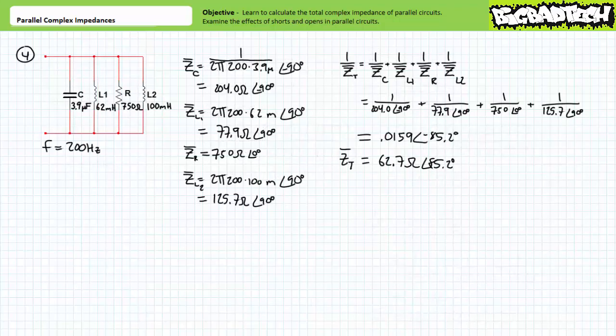Finally, for our fourth example problem, we've been given a parallel relationship of a 3.9 microfarad capacitor, a 62 millihenry inductor, a 750 ohm resistor, and a 100 millihenry inductor at an excitation frequency of 200 hertz. The capacitor is an impedance of roughly 204.0 ohms at an angle of negative 90 degrees. The first inductor is an impedance of 77.9 ohms at an angle of positive 90 degrees. The resistor is an impedance of 750 ohms at an angle of zero degrees. And the second inductor is an impedance of 125.7 ohms at an angle of positive 90 degrees. Calculating the total impedance using the more involved method for two or more impedances in parallel, we arrive at a total impedance value of 62.7 ohms at an angle of positive 85.2 degrees.